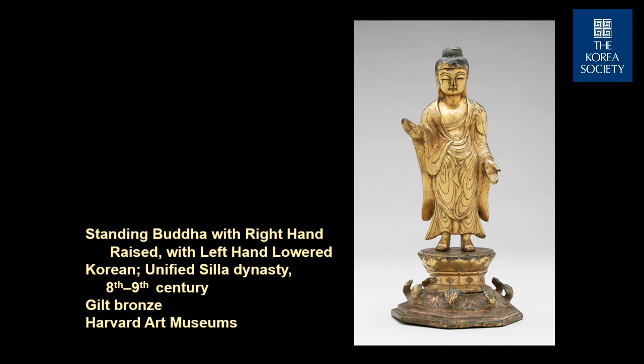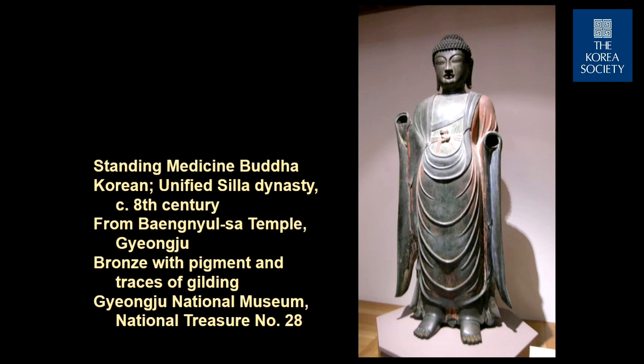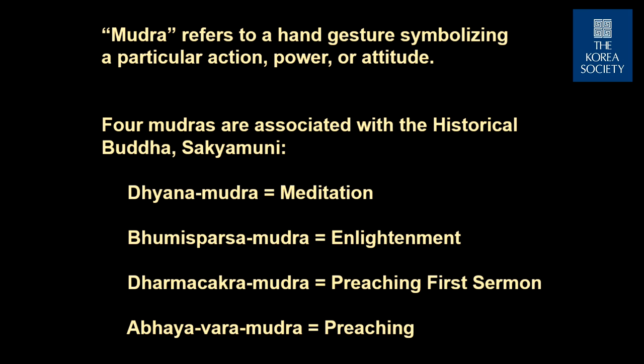You know now exactly how to identify a Buddha. Of course, this is one of the great ones — one of the largest bronze figures ever made, in the museum in Kungju from the 8th century. But even though the hands are missing, you immediately recognize it as a Buddha.